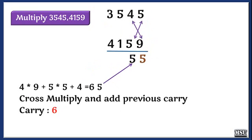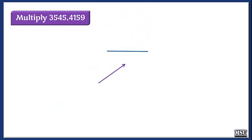And then I am doing 2 cross multiplications. So 4 into 9 and 5 into 5 plus the carry. I am getting 65.